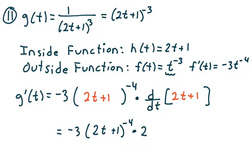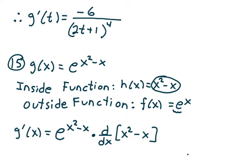When I find g prime of t, I look to the outside function and replace t with 2t plus 1. So the derivative of the outside function evaluated at the inside function gives me negative 3 times (2t plus 1) to the negative 4. Then I multiply by the derivative of 2t plus 1 with respect to t, giving negative 3 times (2t plus 1) to the negative 4, times 2. Simplifying, g prime of t equals negative 6 divided by (2t plus 1) to the 4th.